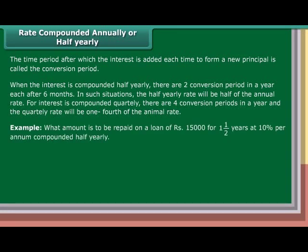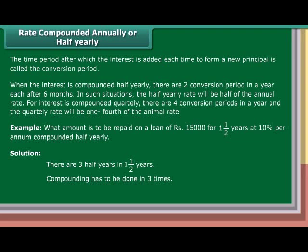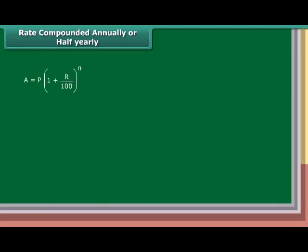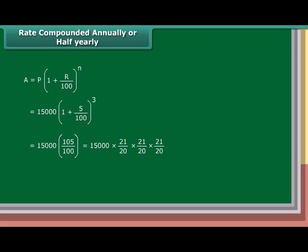Example: What amount is to be repaid on a loan of Rs. 15,000 in one and a half years at 10% per annum compounded half yearly? Solution: There are three half years in one and a half years, so compounding is done three times. Rate equals half of 10%, equals 5% half yearly. A equals P into (1 plus R upon 100) raised to N, equals 15,000 into (1 plus 5 upon 100) cubed, equals 15,000 into (21 upon 20) cubed, which equals Rs. 17,364.37.